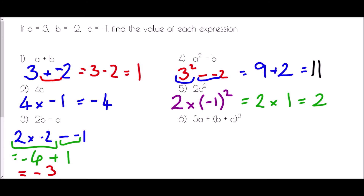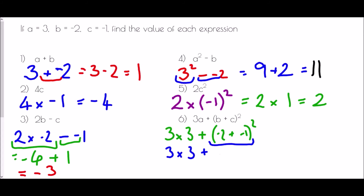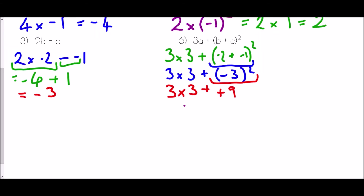In question 6, we have 3a, then brackets b plus c, all squared. That's 3 times 3, plus in brackets negative 2 plus negative 1. Complete the brackets first: negative 2 plus negative 1 is negative 3, and that is squared. Negative 3 squared is negative 3 times negative 3, which is positive 9. So we have 3 times 3 plus 9, which is 9 plus 9, giving 18.